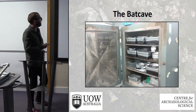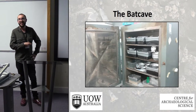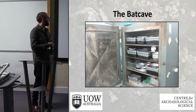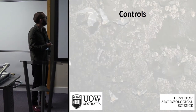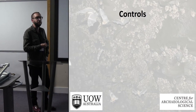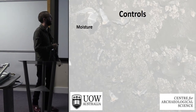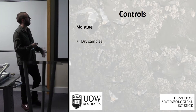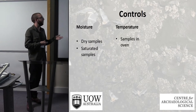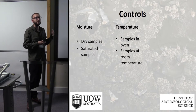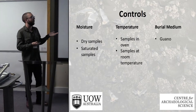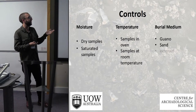This is the bat cave in the laboratory, which I've inflicted upon my colleagues — it has a blast radius. Alongside the waterlogged guano samples there are a number of controls looking at variables such as moisture: some dry ones, some saturated ones, some kept in an oven, some at room temperature. Additionally there are ones buried in guano, ones buried in sand, and ones that have been exposed.